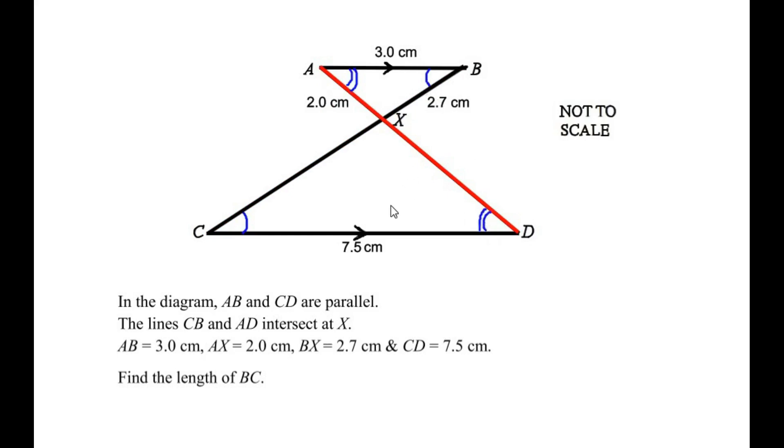Once the two angles have been proven equal, then the third angle is going to be equal as well. Angle X is the vertically opposite angle of the two triangles. So we can see that triangle AXB and triangle CXD are similar. Let me redraw these two triangles.